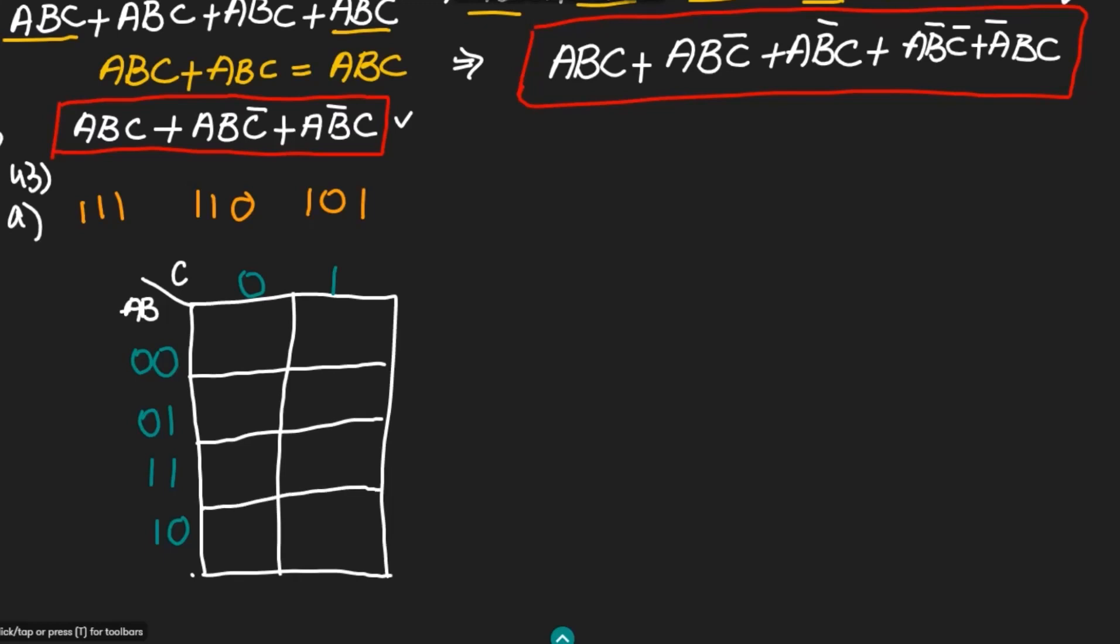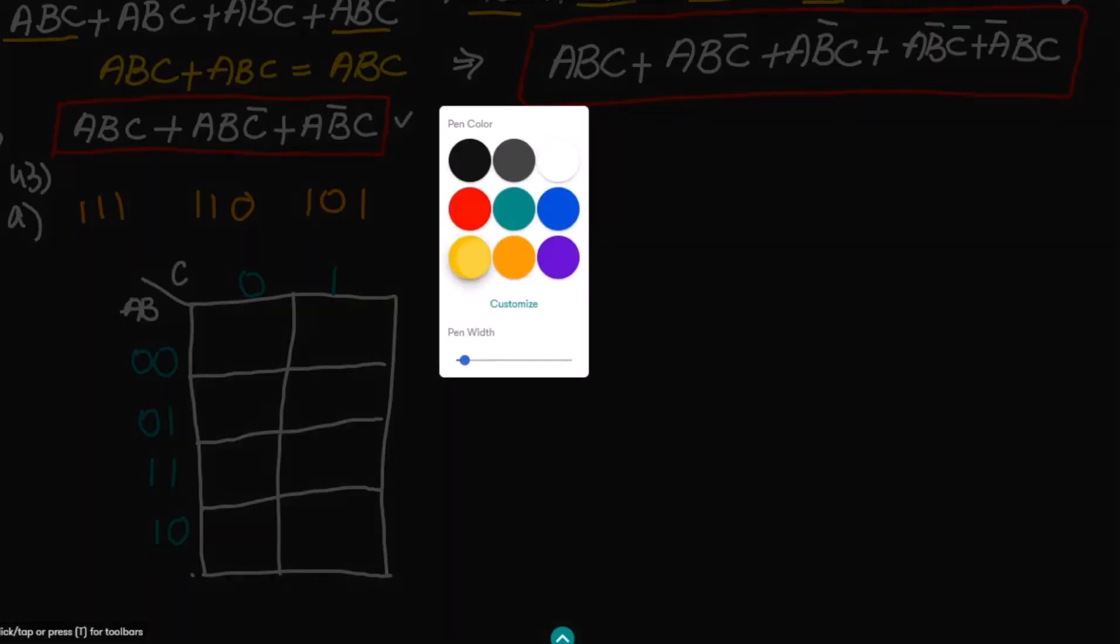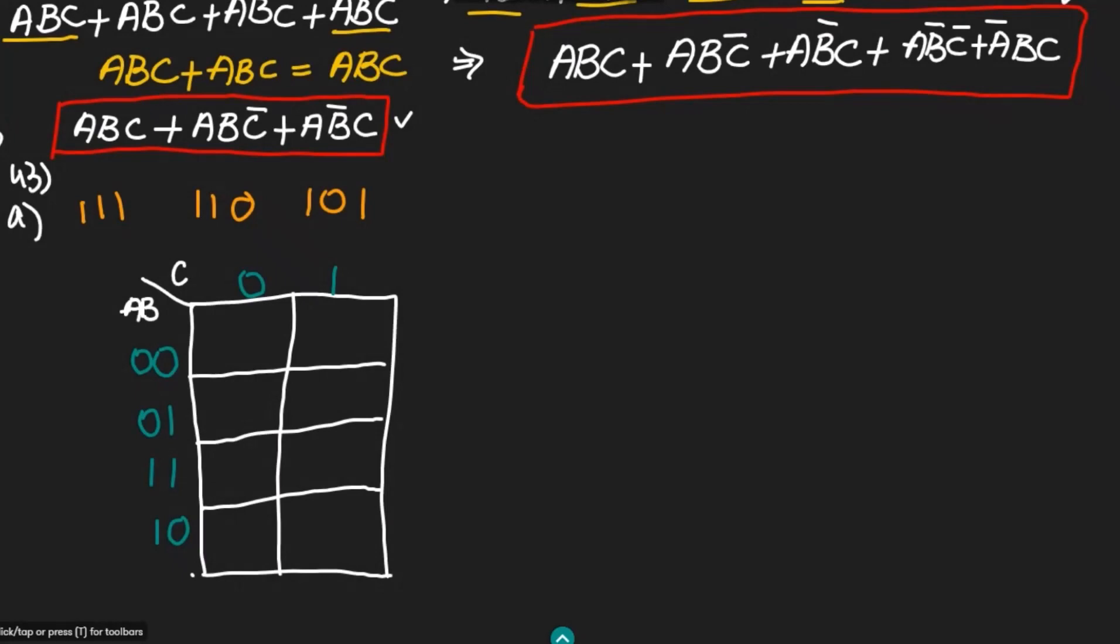Now writing all the terms 1 for which I have got these binary values. I have 1 for 111, so this is here. 110 is here, and 101 is here. All the other remaining terms are basically zeros. These are basically the terms.